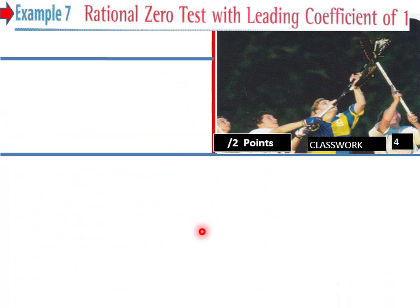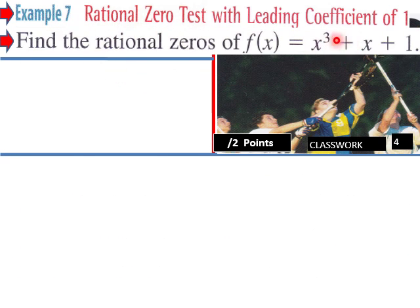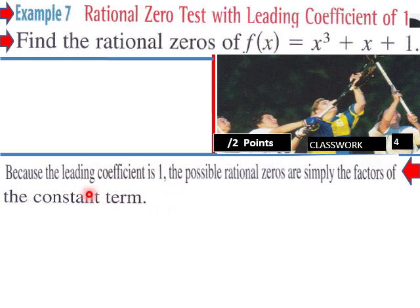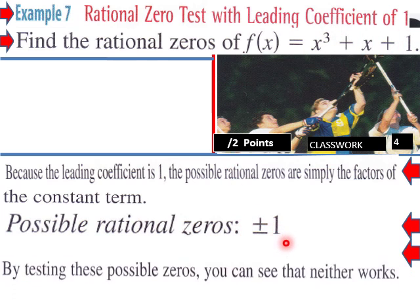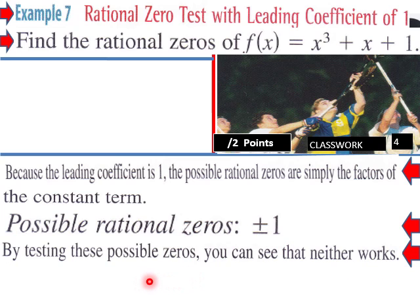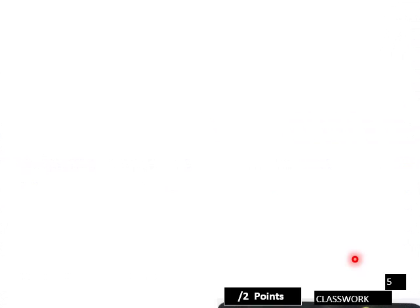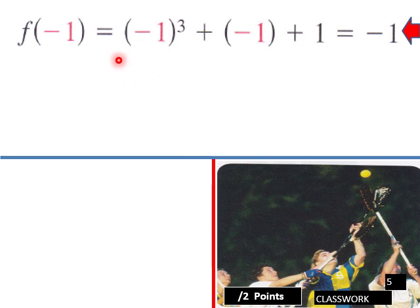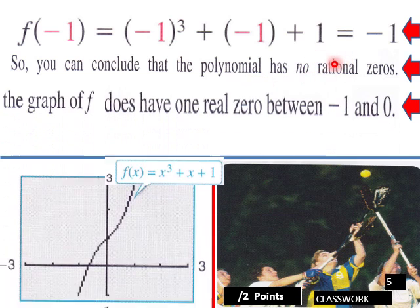Example 7: rational zero test with leading coefficient of one. Here is a cubic third-degree polynomial. Because the leading coefficient is one, the possible rational zeros are simply the factors of the constant term, which in this case is one. Possible rational zeros will be plus or minus one. By testing these possible zeros, you can see that neither works — plugging in one gives a result of three, and plugging in negative one gives negative one. None come up zero, so you can conclude that the polynomial has no rational zeros.